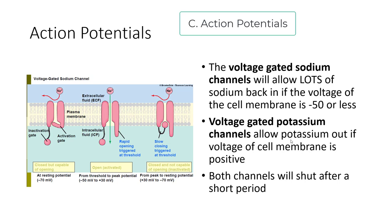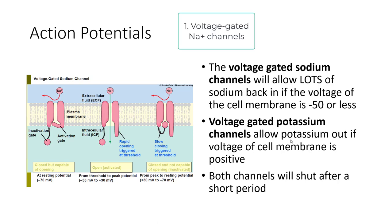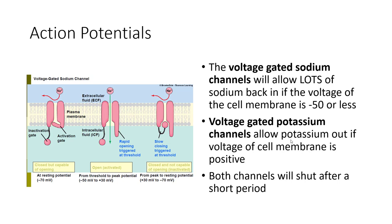What is an action potential? An action potential is when the voltage-gated sodium channels allow a lot of sodium back in if the voltage of the cell membrane is negative 50 millivolts or anything more positive than that. Sodium is at a high concentration outside the cell and is positively charged, so allowing it all in makes the cell become very much more positive very rapidly. There are also voltage-gated potassium channels — if the voltage across the cell membrane is positive, potassium channels will open and let all the potassium out, going down both its concentration gradient and voltage gradient.